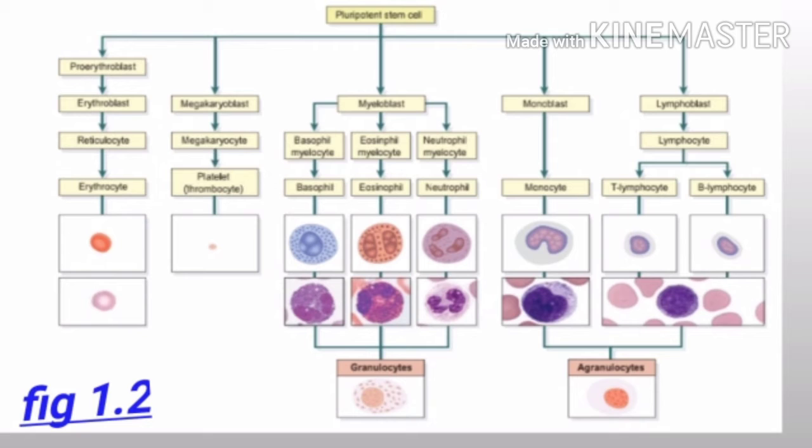The myeloblast is further divided into basophil, eosinophil, and neutrophil at the myelocyte stage, which are further divided into mature basophil, eosinophil, and neutrophil.